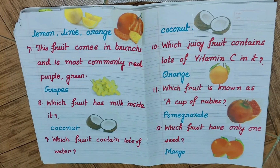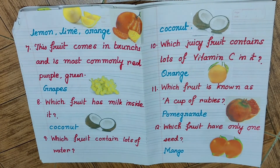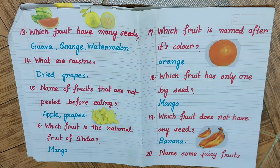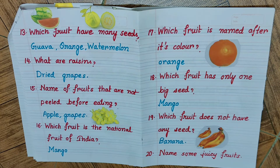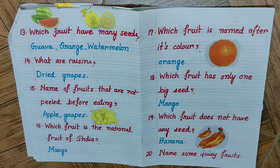Question number thirteen: which fruits have many seeds? The answers are guava, orange, and watermelon — all three of these fruits have many seeds. Question number fourteen: what are raisins? Raisins are basically dried grapes. Question number fifteen: name fruits that are not peeled before eating. The answers are apple and grapes — you can consume both along with their outer skin.